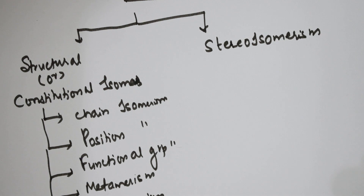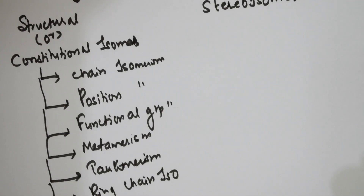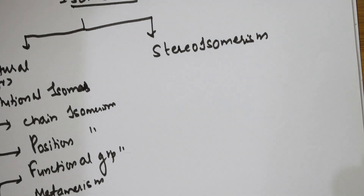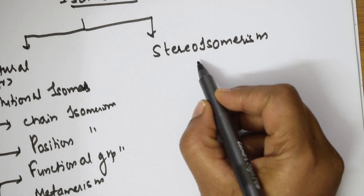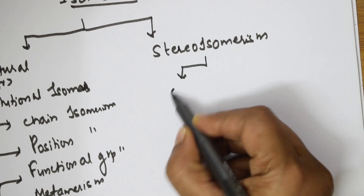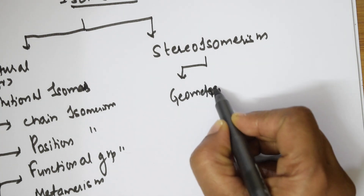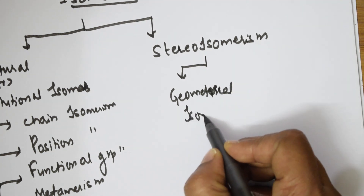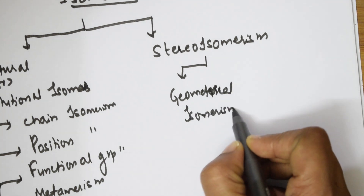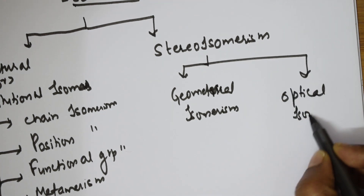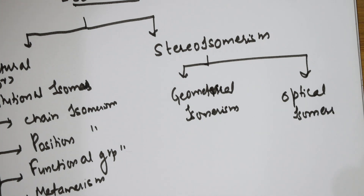Now let us come back to stereo isomerism. Stereo isomerism is again classified into two types. The first is geometrical isomerism, and the second category is optical isomerism or optical isomers.